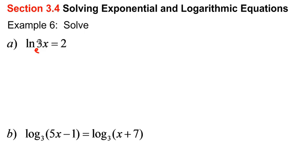If I wanted to get rid of this LN, what's one of our properties that we've used? If you come over here, isn't that when you have E to the power of LN? Because if this is E right here, then those would cancel out, right?